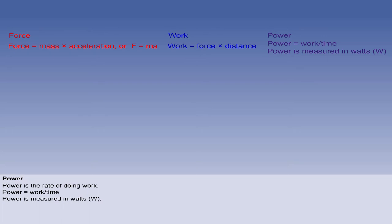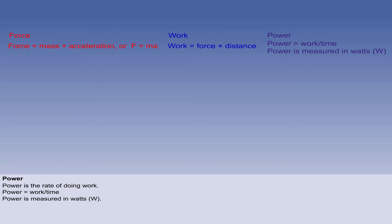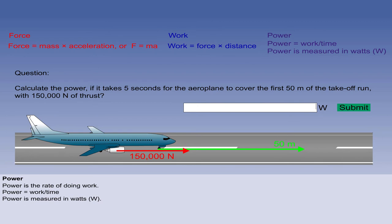Power is the rate of doing work, and is therefore expressed in an equation as power equals work divided by time. The unit of power is the watt, which is designated by the letter W. Returning to our previous example of an aeroplane on a runway with 150,000 newtons of thrust, calculate the power to cover 50 metres in 5 seconds. Type your answer in the box and click to submit. Power is found by dividing the work done by the time it was achieved in.